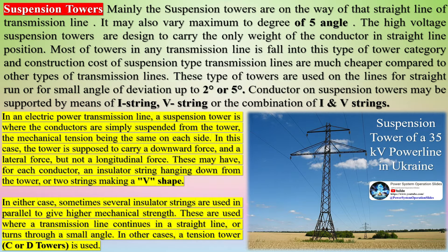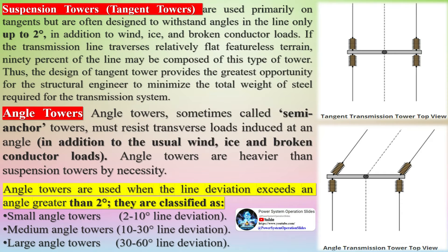Suspension towers are mainly positioned along the straight line of a transmission line, and may vary up to a maximum of 5 degrees of angle. High-voltage suspension towers are designed to carry only the weight of the conductor in straight-line position. Most towers in any transmission line fall into this category, and their construction cost is much cheaper compared to other types.